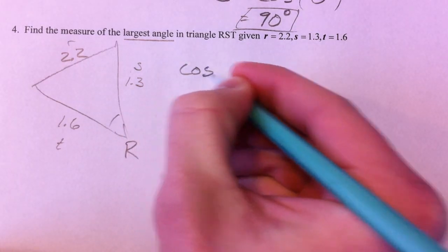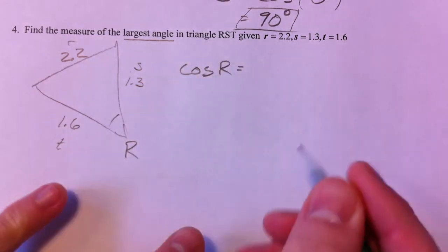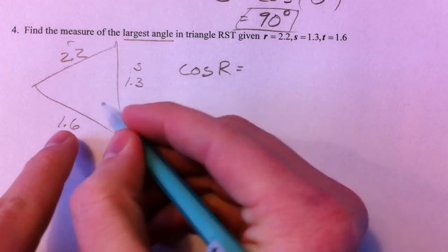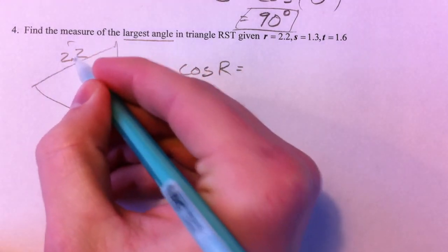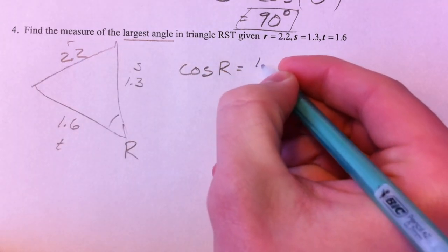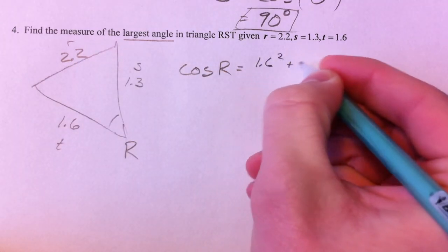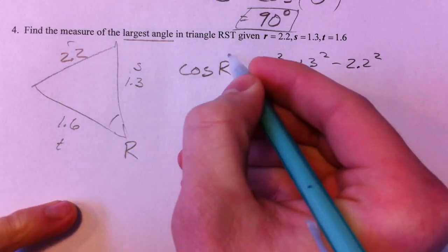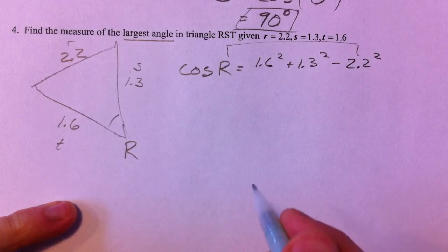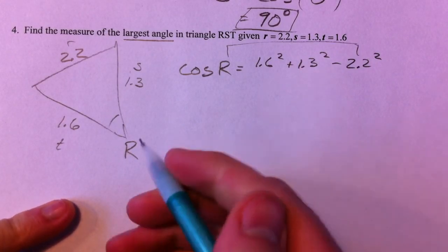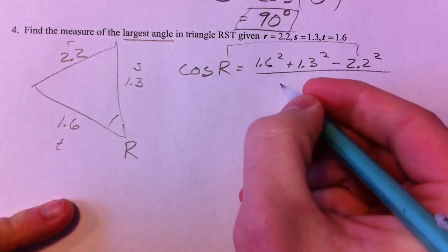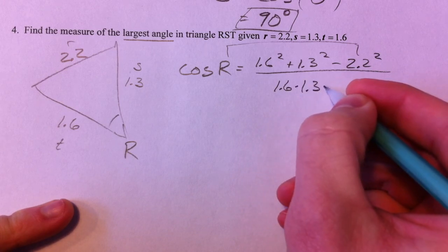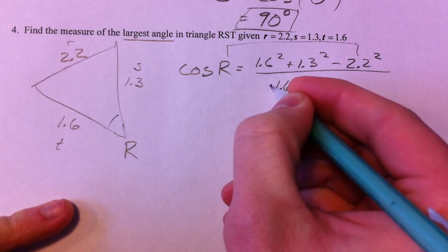So your cosine of angle R. And again, you've got just your two sides go first, and then the opposite side goes across. So 1.6² plus 1.3² minus the 2.2². It's very important that these two match up. We talked about that earlier. R was across from the 2.2, and then 1.6 times 1.3 times 2 out front.